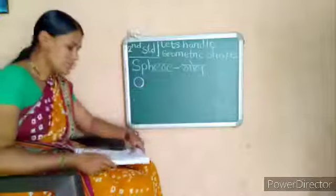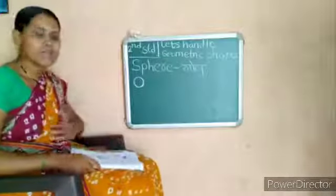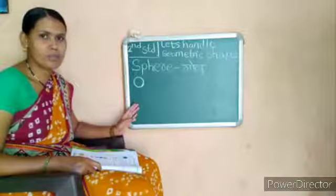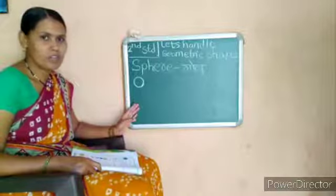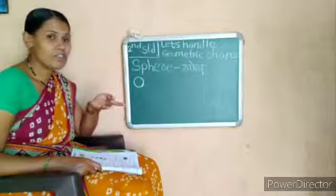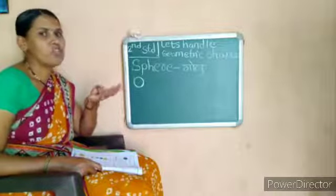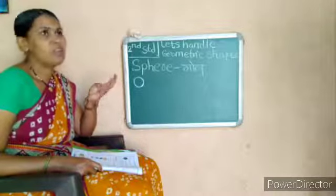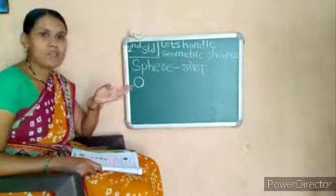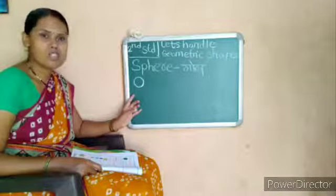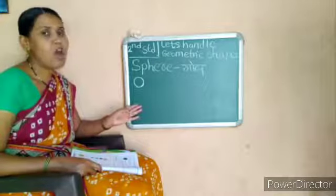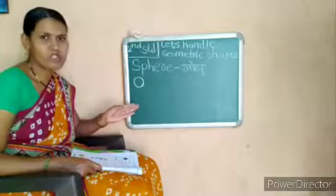Now we see a sphere has — we see the edges, corners, and surface of this shape also. Just like we saw how we can see the edges, corners, and surface of cuboid shape, cone shape, and cylinder shape. Similarly, we see how many edges, how many corners, and how many surfaces a sphere has.